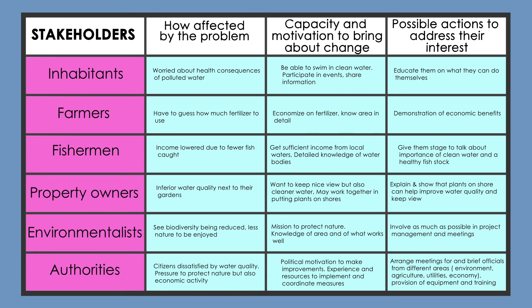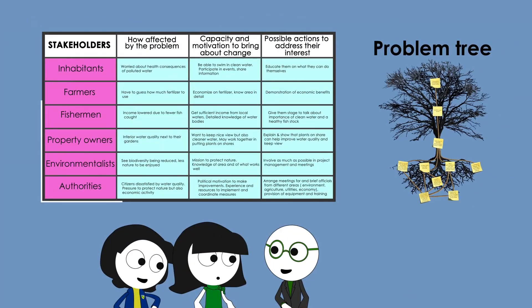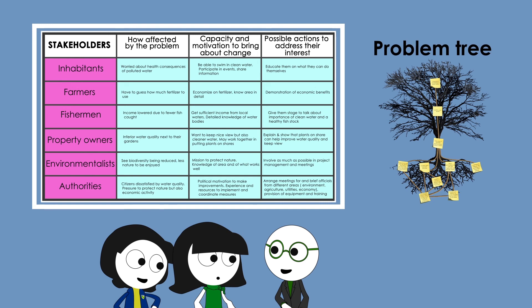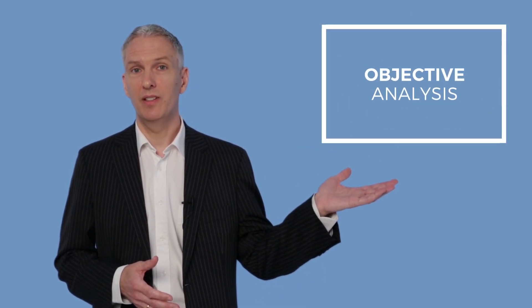From this point onwards, the partners agree to consult with these organizations while designing their project. You can find more details on the stakeholder matrix in the file provided here. Anna, Boris, and Carla now have a good understanding of who the stakeholders are and how they might be involved in solving the problem. With the stakeholder matrix in hand, they can move on to the next step of project development: objective analysis.